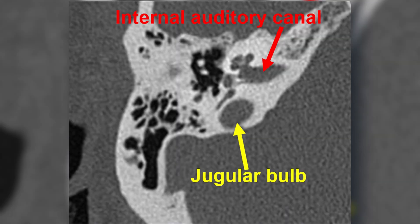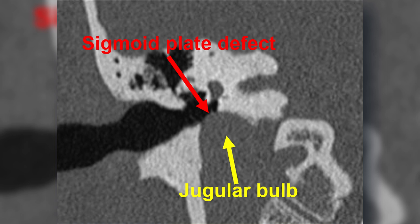On a more superior axial section, the internal auditory canal is observed and the jugular bulb remains visible, confirming the presence of a high jugular bulb. On coronal reconstruction, a high jugular bulb with a defect in the sigmoid plate is evidenced, a finding compatible with a dehiscent high jugular bulb.